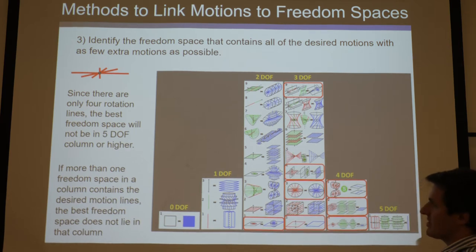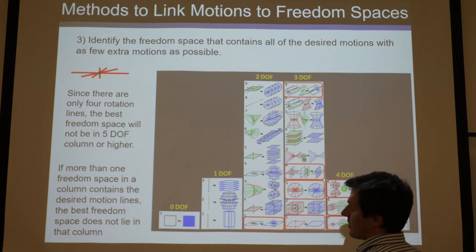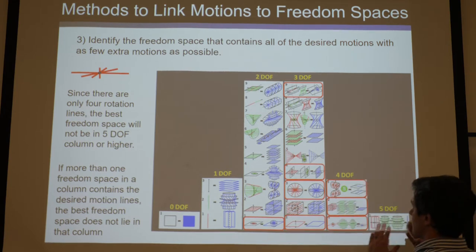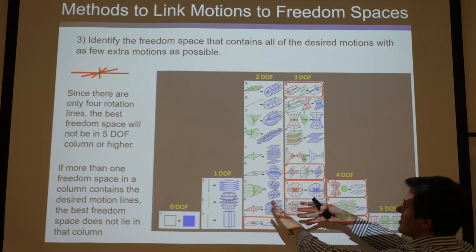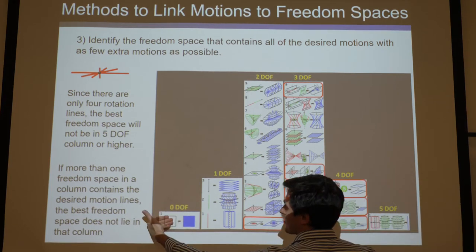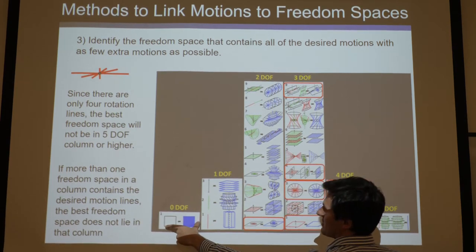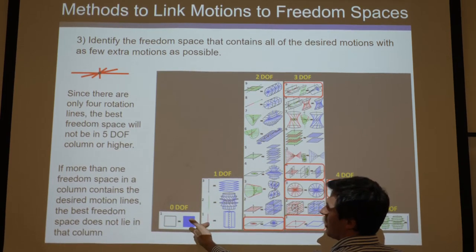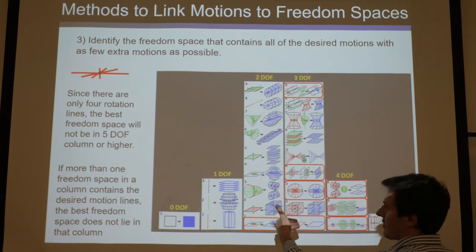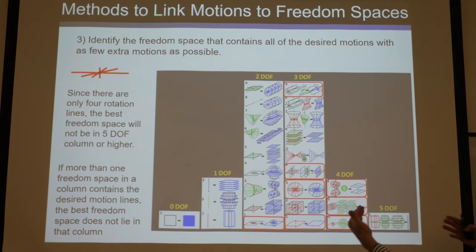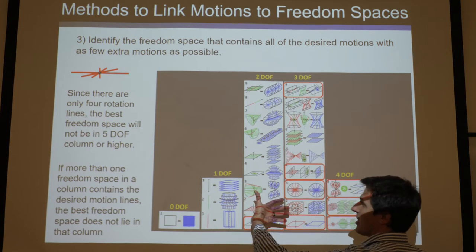Another way you could have approached this — and this would have been easier actually — sometimes it's easier to start from the column that has as many motions as they give you and march this way, or you could start from this direction, go this way, and just start looking for it. Does it lie in here? Well, obviously not, there's nothing. Does it lie in here? Well, there's just one. We need all four in there, so it doesn't, and then you can go to there and you'll find it quicker if you go that way. So there's two different logics you can use.